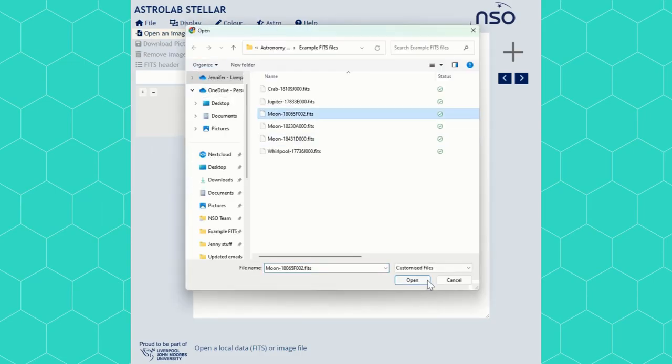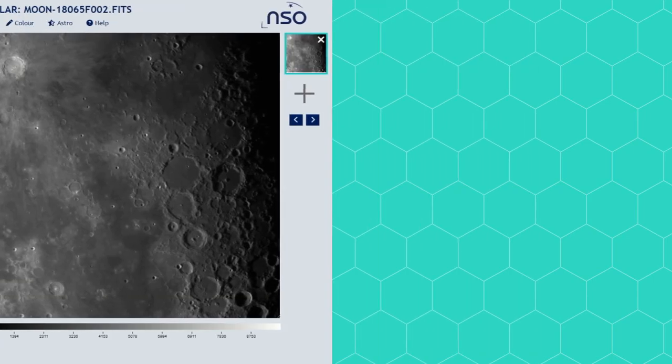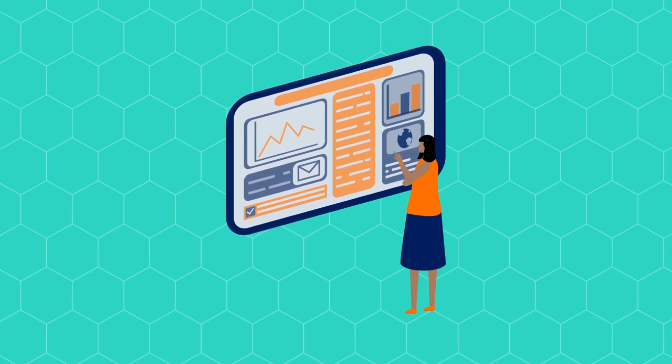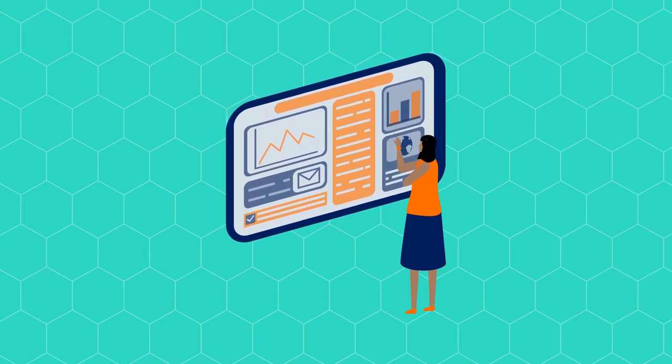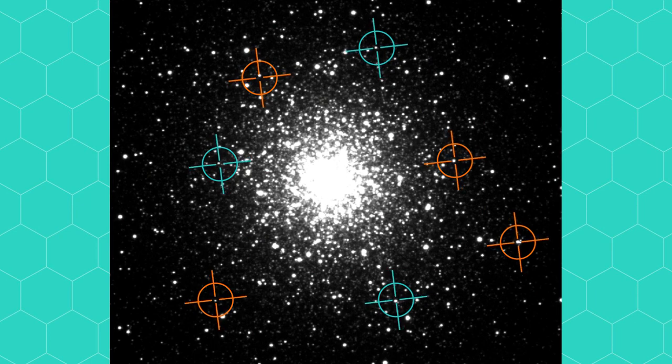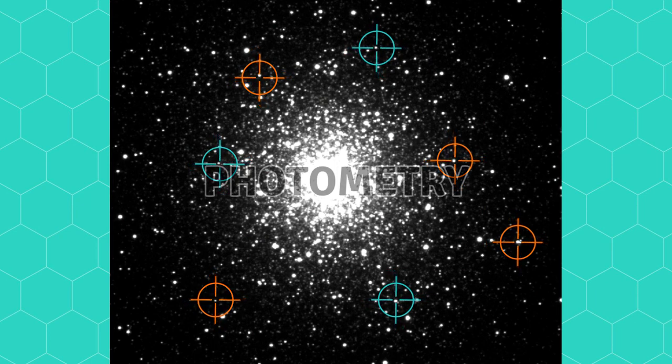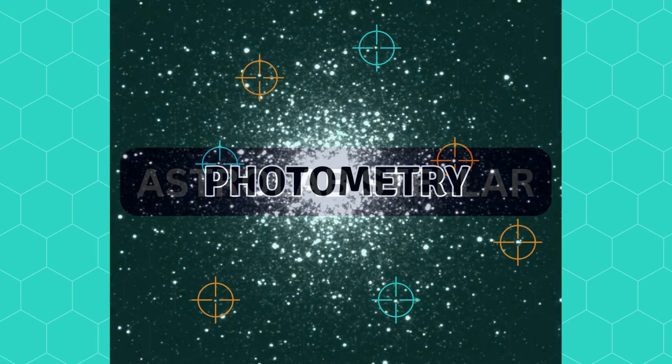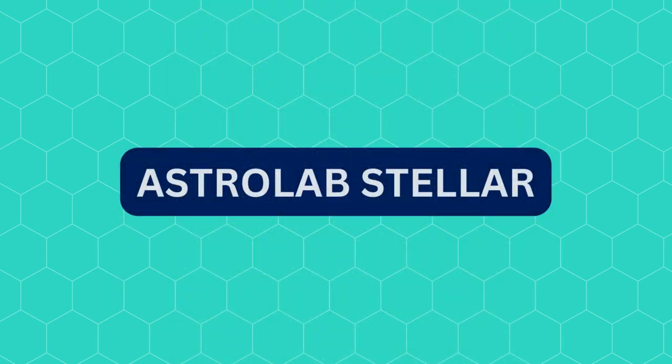Astrolab can do much more than just open images. The files from the telescope help us to do real science and Astrolab guides us through this. Measuring the brightness of objects in space is known as photometry. To do this in Astrolab you will need to make sure that you are using Astrolab Stellar.